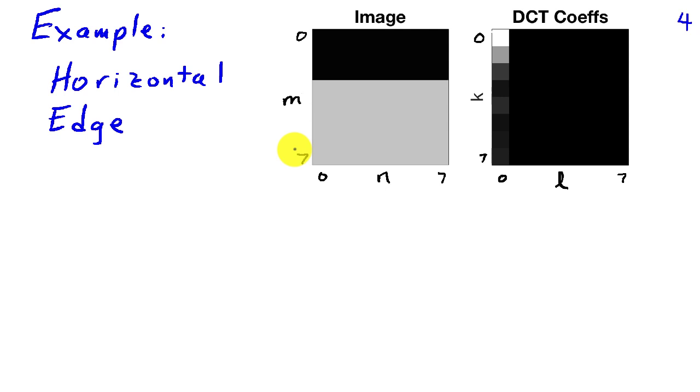In this example, we're showing an 8 by 8 image which consists of a horizontal edge. So we're going from light gray to nearly black.